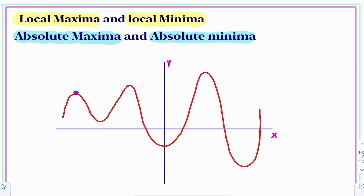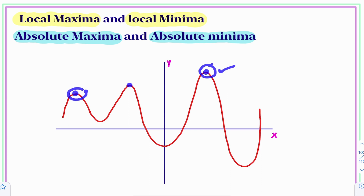You observe this function attains maximum value at this point, at this point, and at this point. In these three points, which one is greatest? This one is greatest. So we say that this function is having absolute maximum at this point. What about these two points? At these two points also, the function is maximum, but these are known as local maxima.